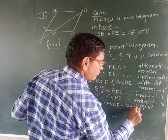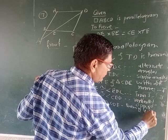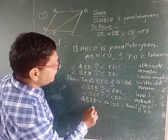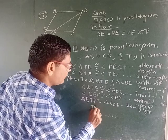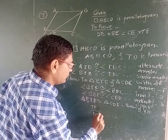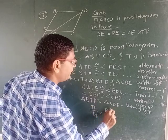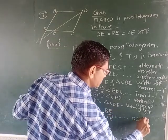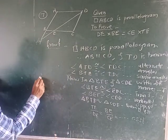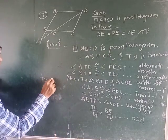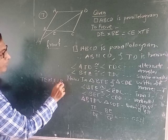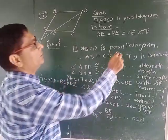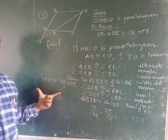Now we have to write the ratios. TE upon DE is equal to BE upon CE. This is CSST. And by cross multiplication, TE into CE is equal to BE into DE. This is the equation. Hence, it is true.